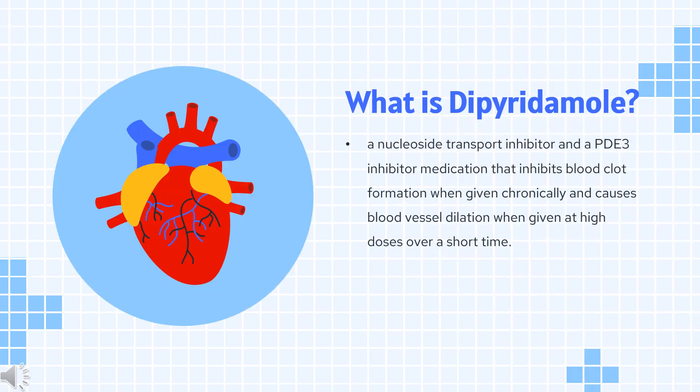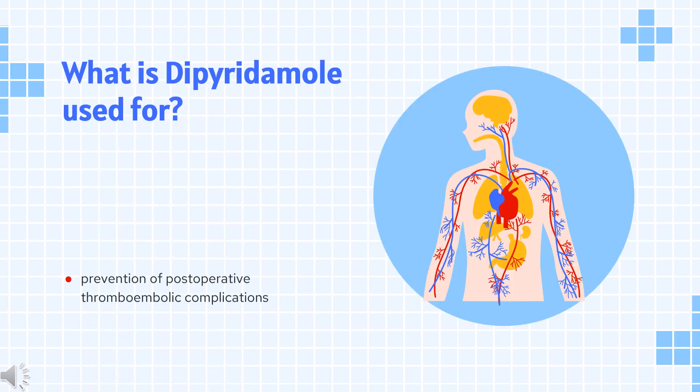What is dipyridamol? Dipyridamol is a nucleoside transport inhibitor and a PDE3 inhibitor medication that inhibits blood clot formation when given chronically, and causes blood vessel dilation when given at high doses over a short time.